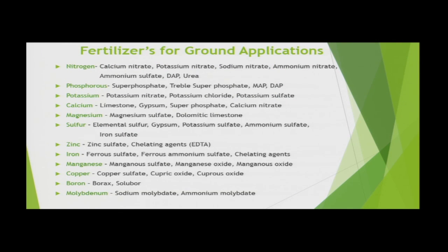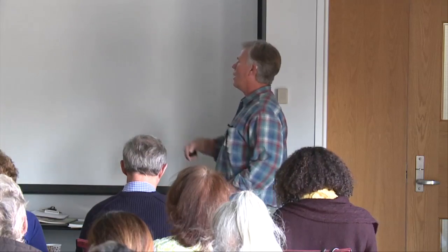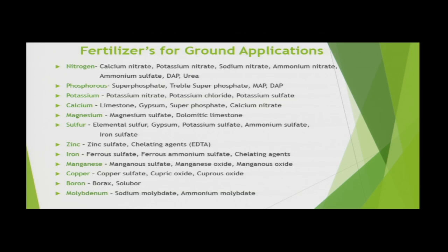Here are some fertilizer products used for ground application — it's not an exhaustive list. You won't see anything like a 10-10-10 or 20-20-20 blend here. You can go into a garden supply store and buy those off the shelf, but unless you actually need that analysis, you may be over-applying your phosphorus if you go with a 10-10-10 or 20-20-20 blend. So you really have to look at that because you may be wasting your money by applying a product if you don't actually need all those elements at that time.